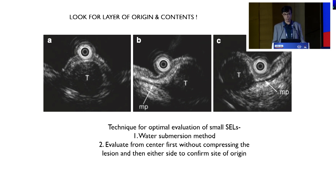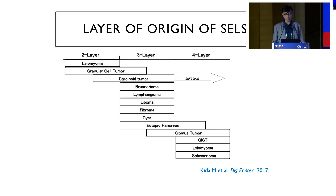This one is arising from the fourth layer — you can appreciate that this is a hypoechoic lesion arising from the fourth layer, so most likely it could be a leiomyoma or GIST. So you ascertain two things: layer of origin and echogenicity. You should know which layer gives rise to what kind of lesions. Second layer gives leiomyoma and granular cell tumor.